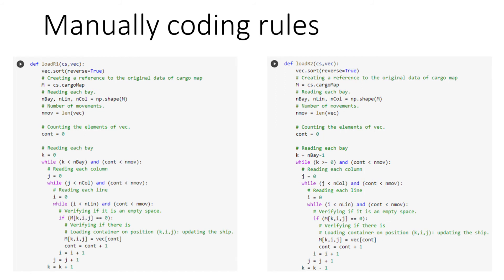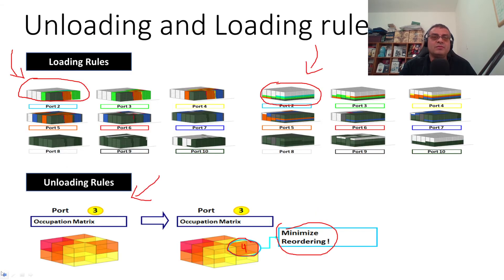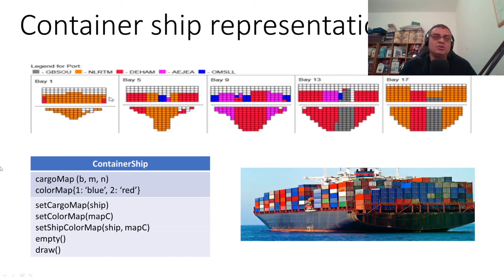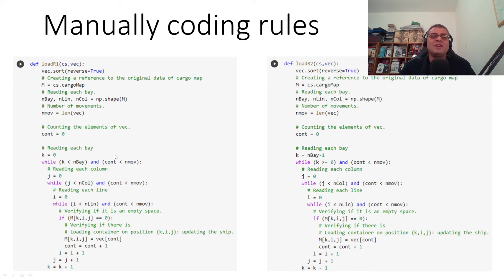This is an example of what we're going to do. We're going to manually code each rule, and each time we create a rule we're going to test it and show what it produces and the logic behind it. We'll show how this code will cooperate with the container ship class code developed in track one.